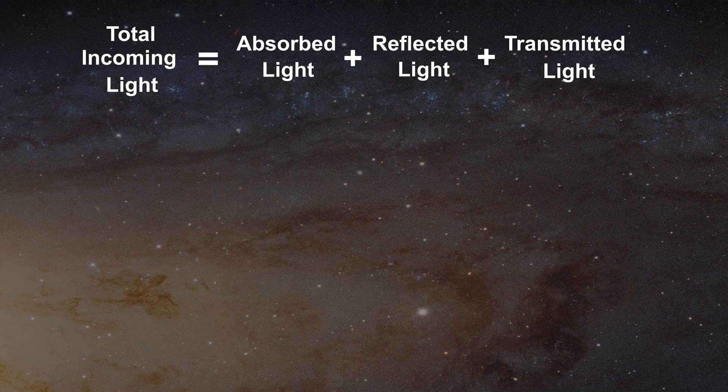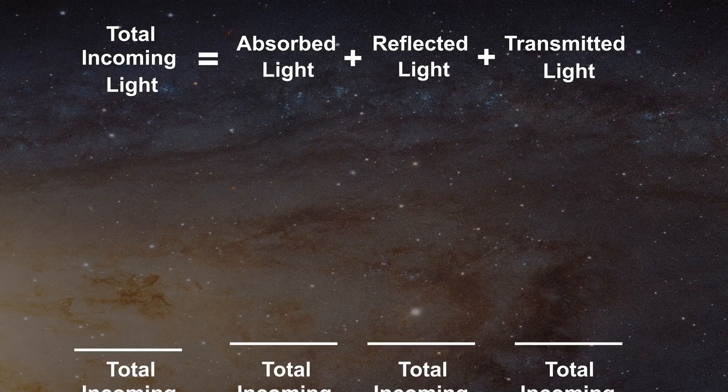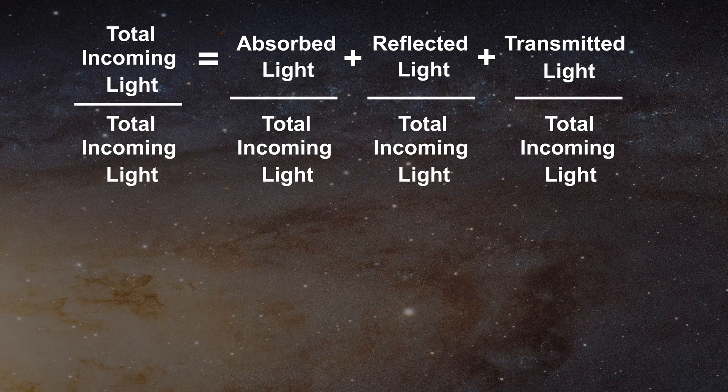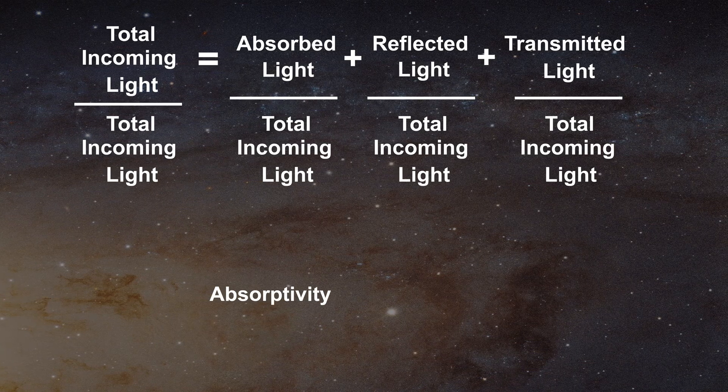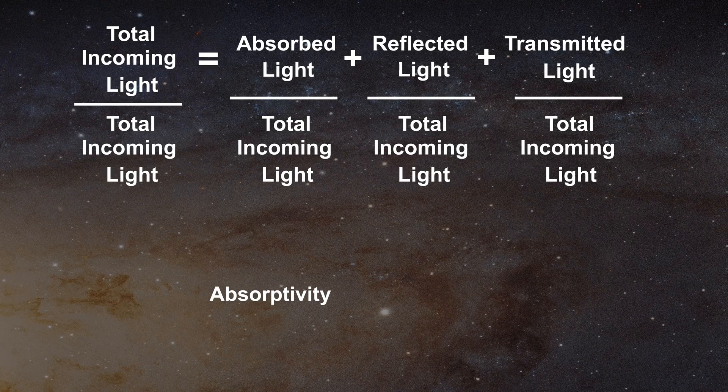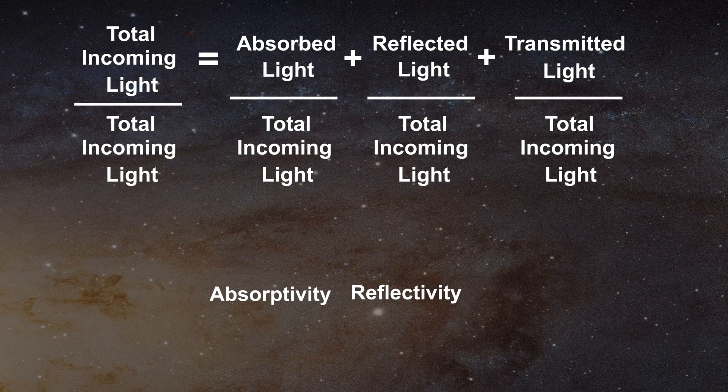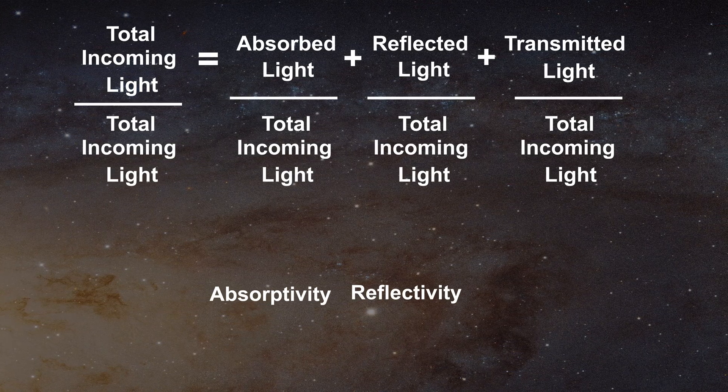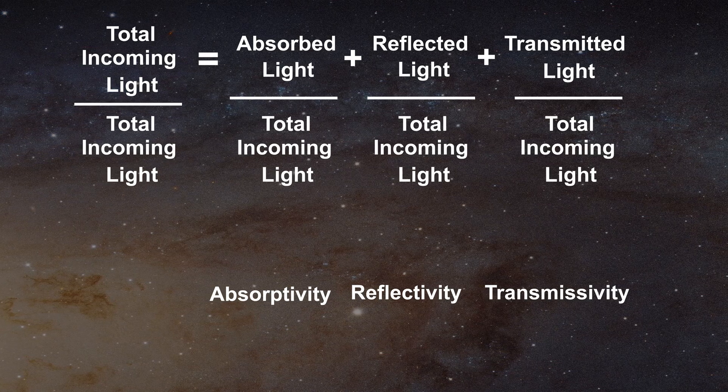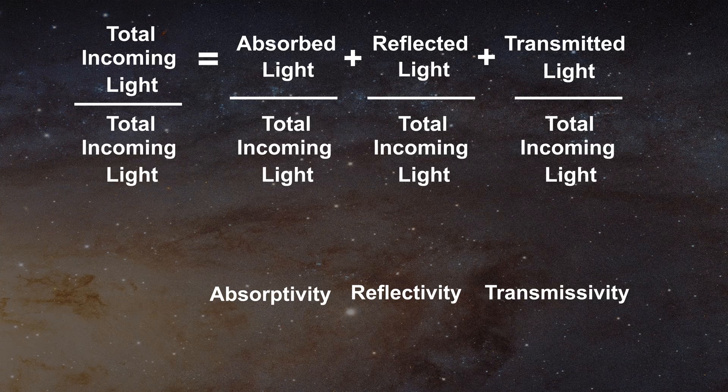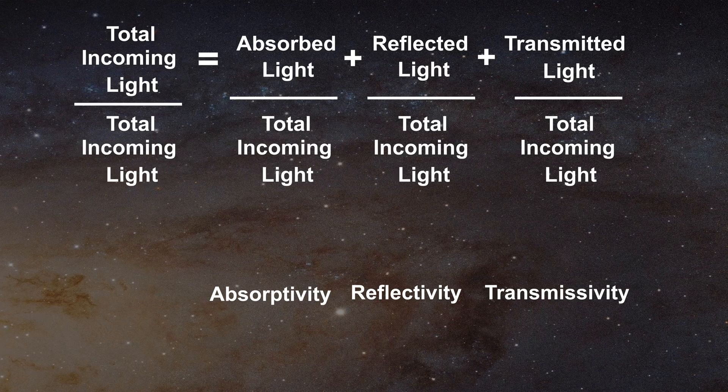We can write this equation in another form by dividing both sides by the total incoming light. Absorptivity is the ratio of the absorbed light divided by the total incoming light. Reflectivity is the ratio of the reflected light over the total incoming light, and transmissivity is the ratio of the transmitted light over the total incoming light. All of these, of course, assume a single frequency.